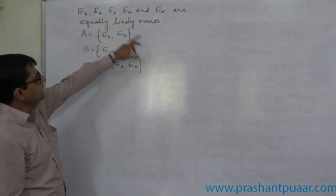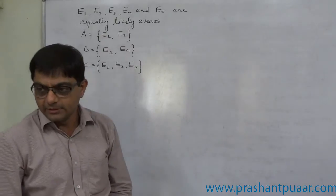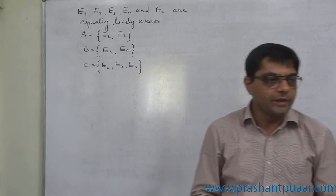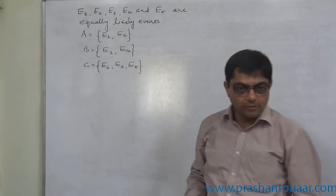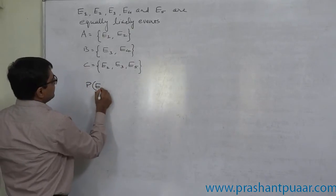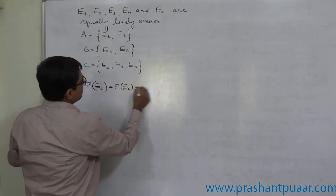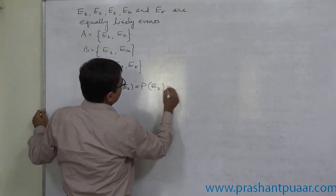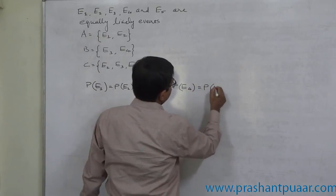E1, E2, E3, E4 and E5 are equally likely events. Equally likely events means the probability of happening of these 5 events are equal. That means P of E1 equals P of E2 equals P of E3 equals P of E4 equals P of E5.